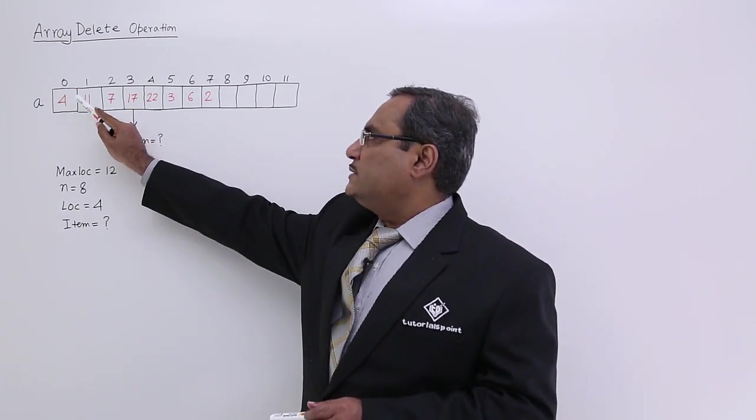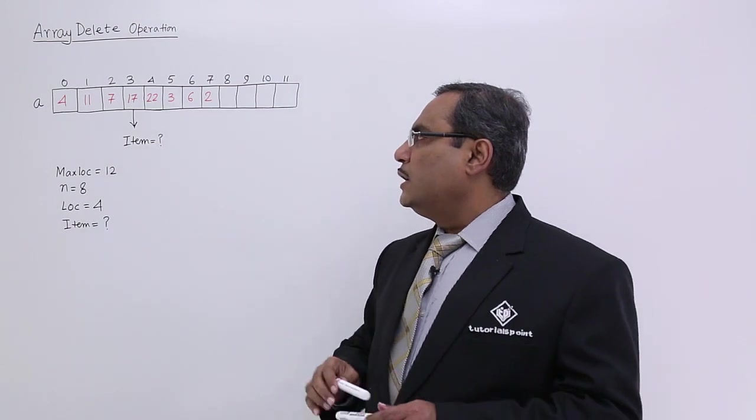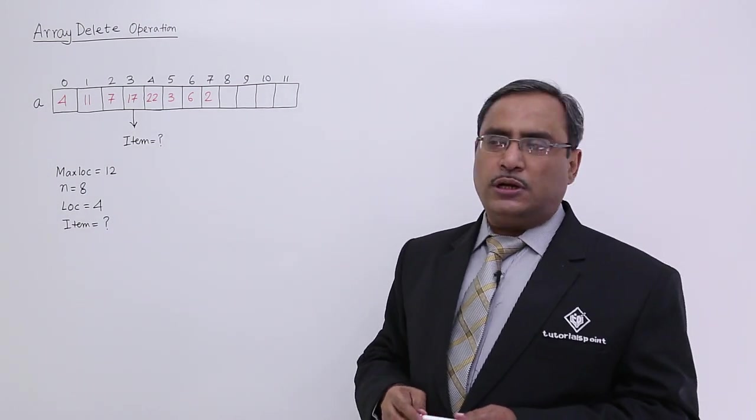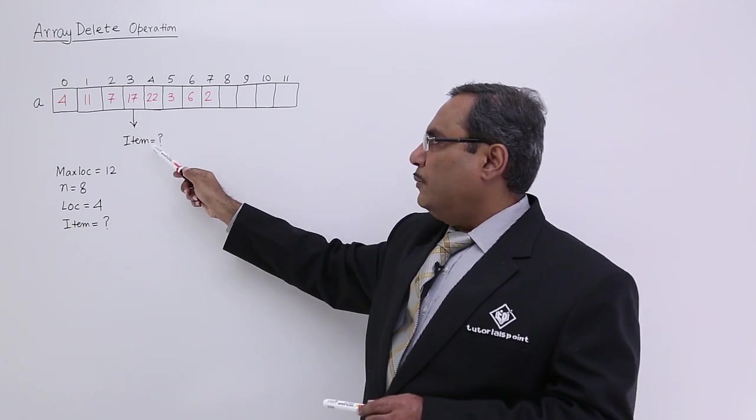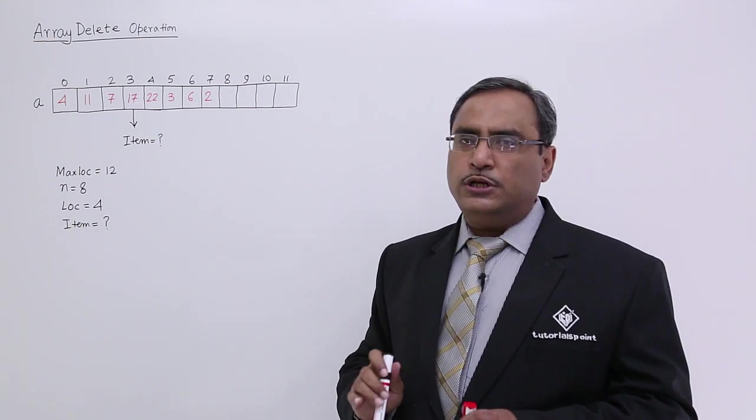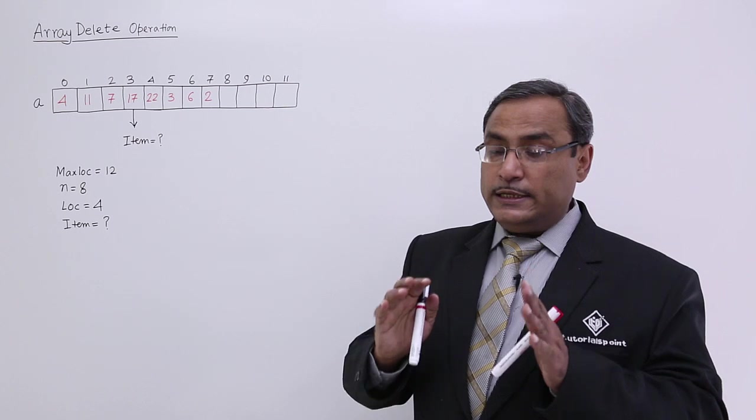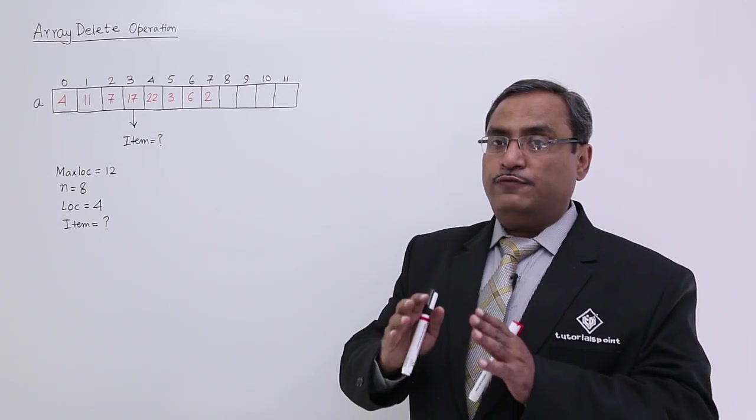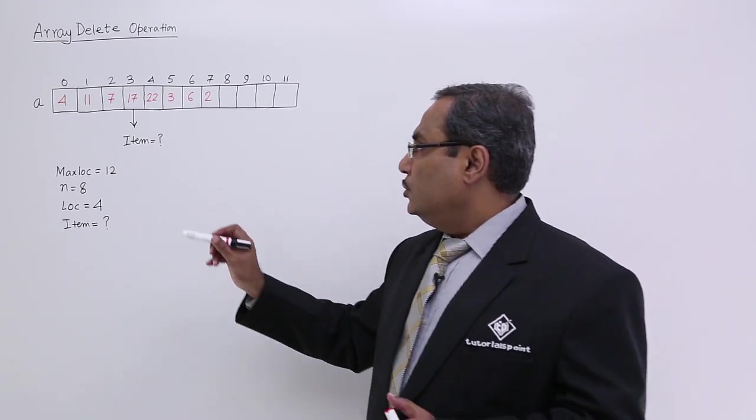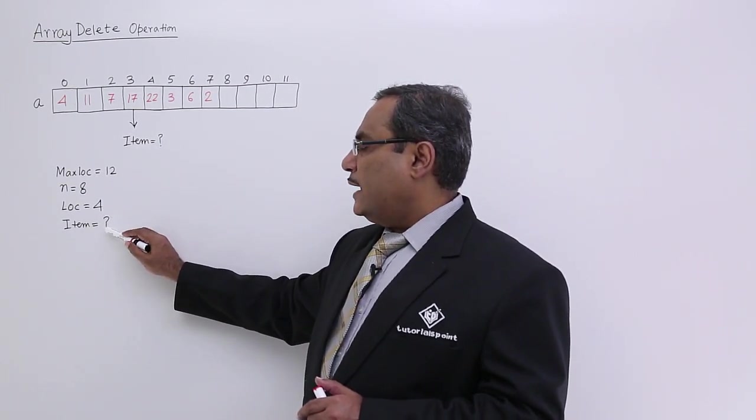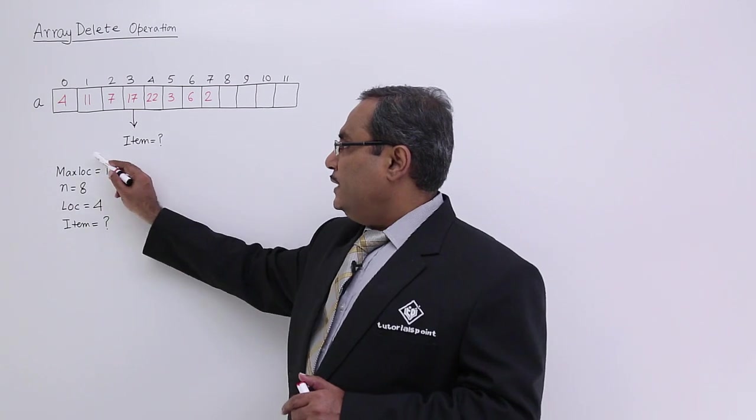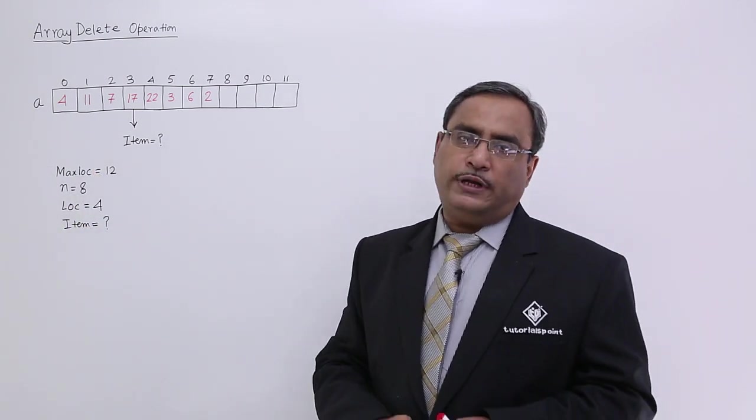From this 4th location, 1st, 2nd, 3rd, 4th location, I want to perform a deletion operation. So after deletion, this 17 will come to item. So before deletion, we do not have the idea what is coming from that location from where data is going to get deleted. So item is equal to question mark, lock is equal to 4 and item is equal to question mark. So in this way, the variables have got initialized.